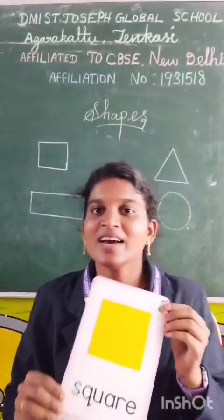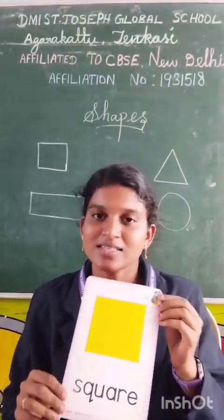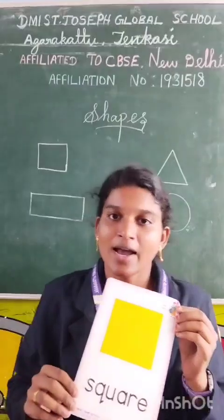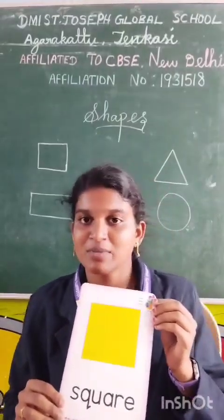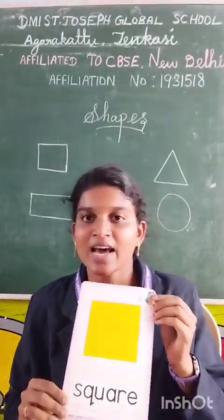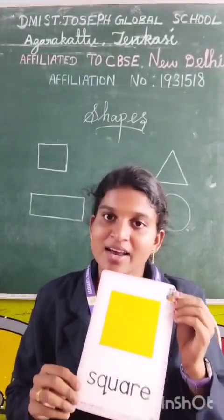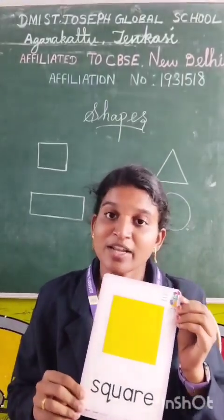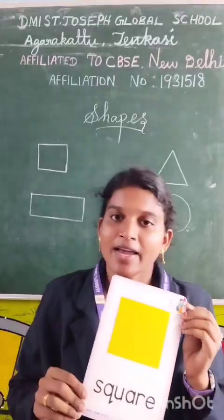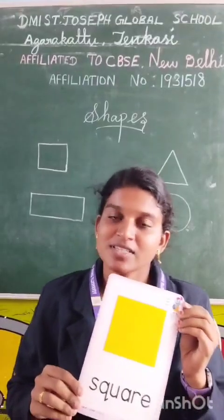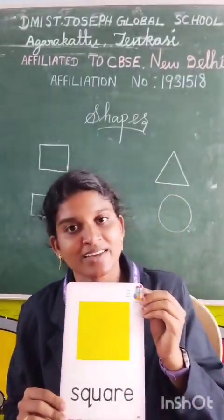I am a square, I am a square. You can see me everywhere. I have four sides. I am a square, I am a square. Once again: I am a square, I am a square. You can see me everywhere. I have four sides. I am a square, I am a square.